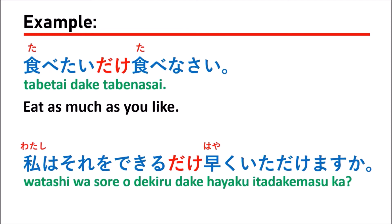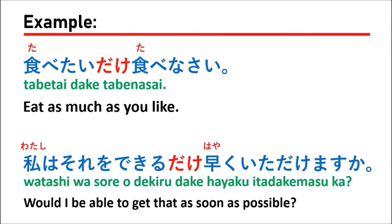私はそれをできるだけ早くいただけますか？ — which means 'Would I be able to get that as soon as possible?'